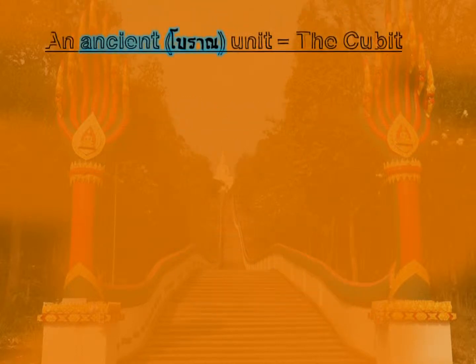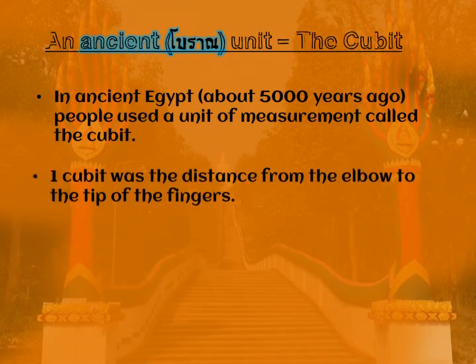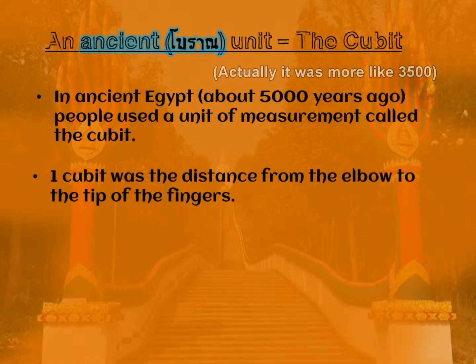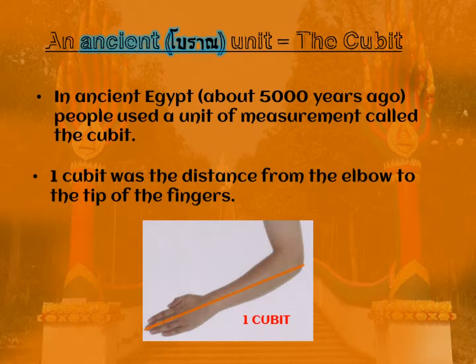Let's start by looking at an ancient unit: the cubit. The cubit is from ancient Egypt — we're talking about 5,000 years ago, one of the first human civilizations. People used a unit of measurement called the cubit, and one cubit was the distance from the elbow to the tip of the fingers. So here is one cubit.